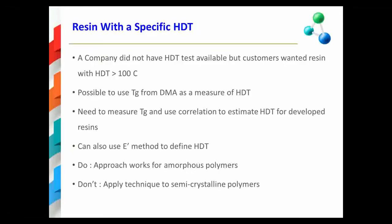Previously, they had not been successful in any of their attempts. It is possible, as I showed on the last slide, to use the decrease in E prime as a measure of the Tg, and that value correlates very well with measured HDT values. This generally means that for new development resins, a single DMA scan and subsequent analysis of E prime data can be used to quickly provide estimates of HDT values. Using this approach, the company was able to quickly screen new resin formulations and meet the HDT value greater than 100 degrees centigrade needed by their particular customer.